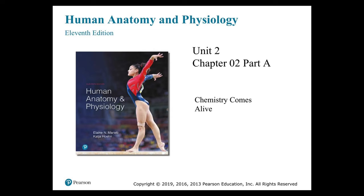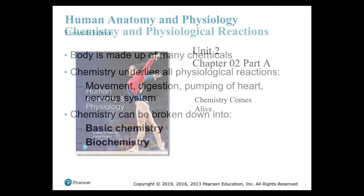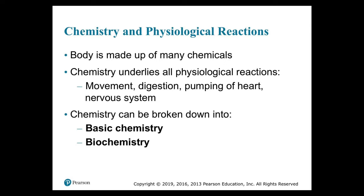Good afternoon, class. Today we're going to start Unit 2. The first part of Unit 2 is a chemistry unit. You're probably wondering why we're doing chemistry in anatomy and physiology, but chemistry is very important because a lot of the processes — digestion, the cardiovascular system — are related to chemistry. We're going to cover very basic chemistry. Our study of the human body begins at the chemical level of organization, and chemistry can be broken down into basic chemistry and biochemistry.